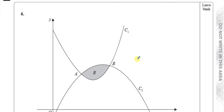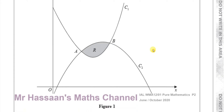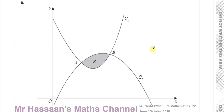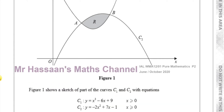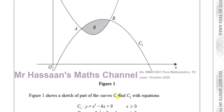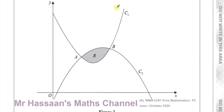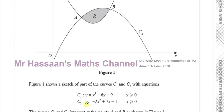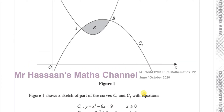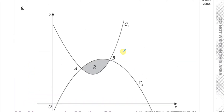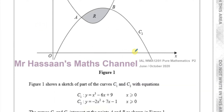Here we have a graph of two curves. Figure one shows a sketch of part of the curves C1 and C2. C1 has equation y equals x cubed minus 6x plus 9 — part of a cubic curve shown here. And C2 is y equals minus 2x squared plus 7x minus 1, a quadratic curve shown as C2.